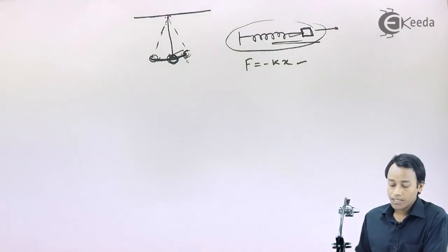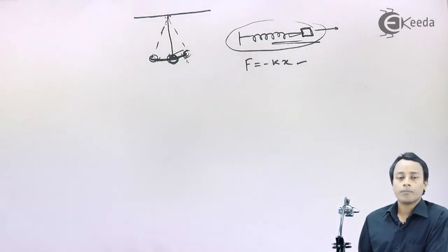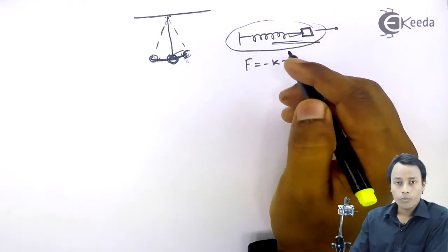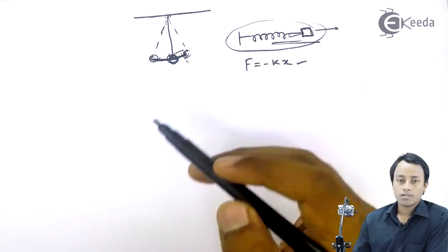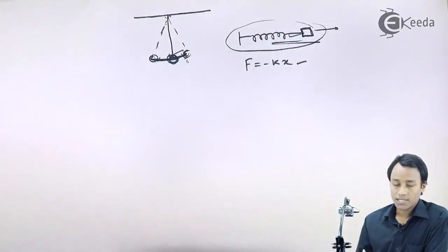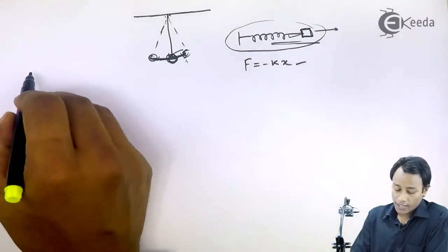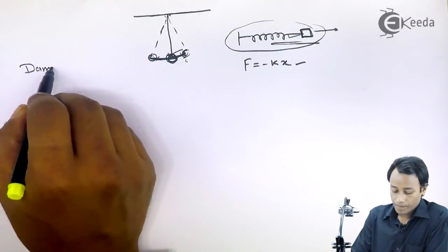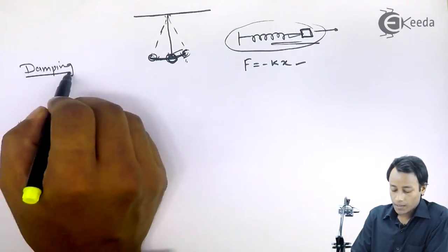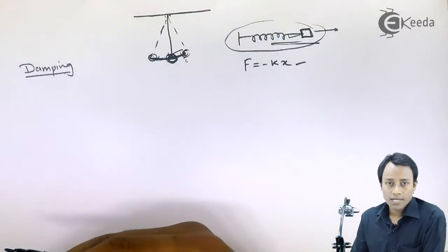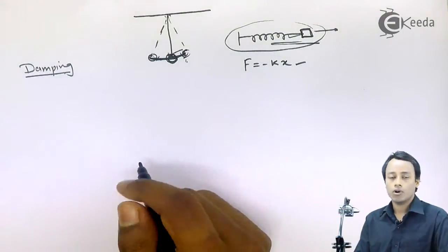So these resistive factors which are present in the environment naturally, due to which the system in oscillation, or you can say the system which is oscillating, it comes at rest. These factors are called damping. And this kind of oscillations are known as the damped oscillation.